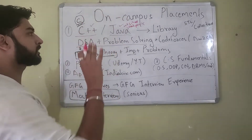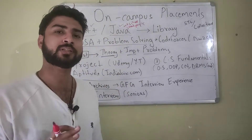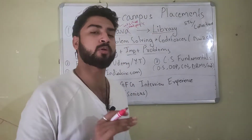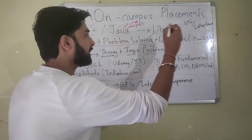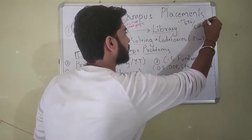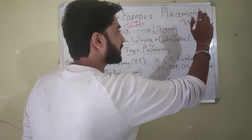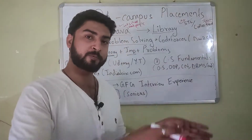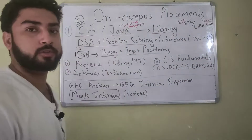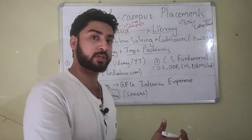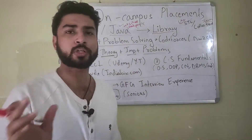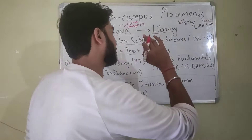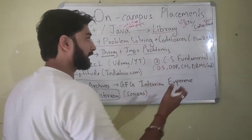Once you've learned the basic syntax of C++ or Java and you're able to form simple programs, the next thing is to learn the library. The library of these programming languages will really help you in solving complex DSA problems. C++ has STL and Java has Collections. To learn C++ STL, go on YouTube and search 'C++ STL in one video' — from the top results, watch one video and try hands-on. Likewise for Java Collections, search 'Java Collections in one video' and do the same.